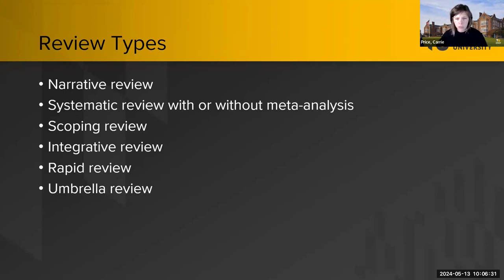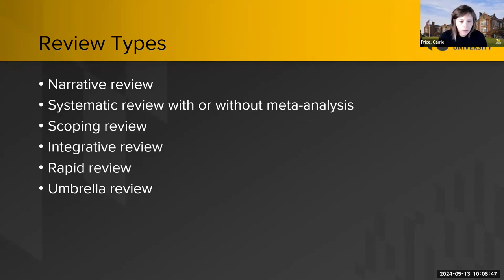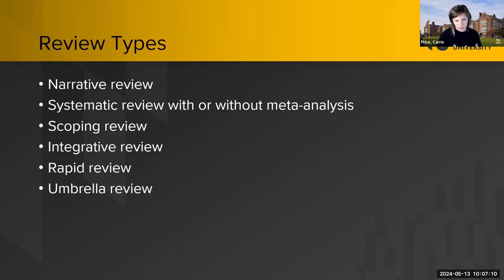We see scoping reviews, which are meant to scope the field of literature and see what kind of evidence exists, what's been done in the past, and what could happen in the future. Integrative reviews are a bit more of a clinical summary. Rapid reviews may skip a step of a systematic review — not to make it easier, but to get the evidence out faster. We saw an uptick of rapid reviews during COVID. And then umbrella reviews take the results of systematic reviews and synthesize them together — a review of reviews.